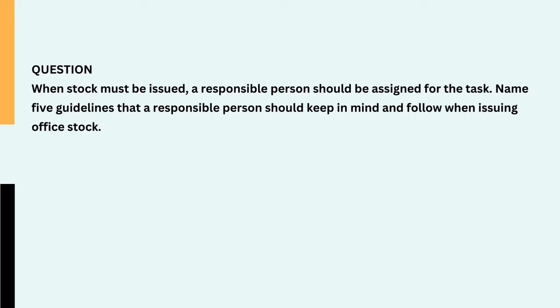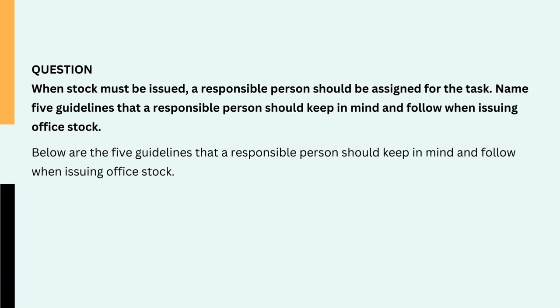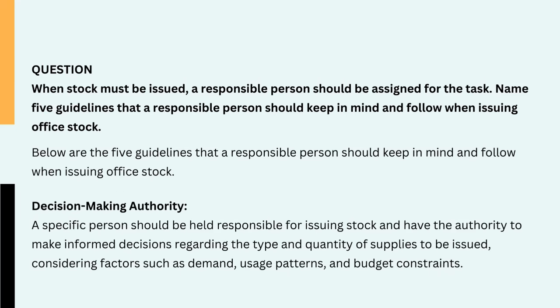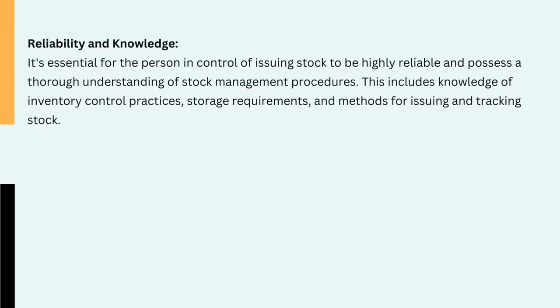Question: When stock must be issued, a responsible person should be assigned for the task. Name five guidelines that a responsible person should keep in mind and follow when issuing office stock. 1. Decision-making authority. A specific person should be held responsible for issuing stock and have the authority to make informed decisions regarding the type and quantity of supplies to be issued, considering factors such as demand, usage patterns, and budget constraints.